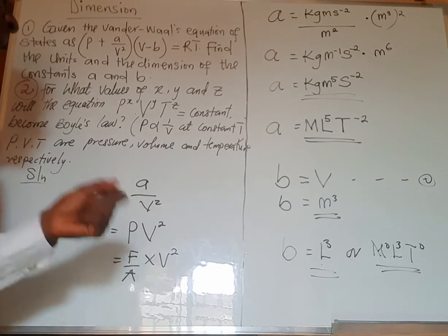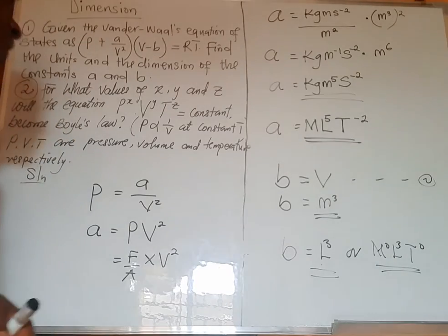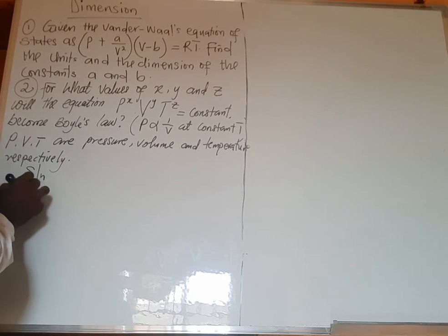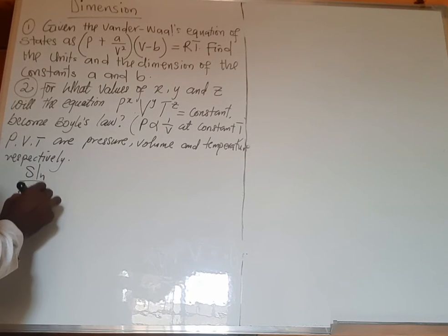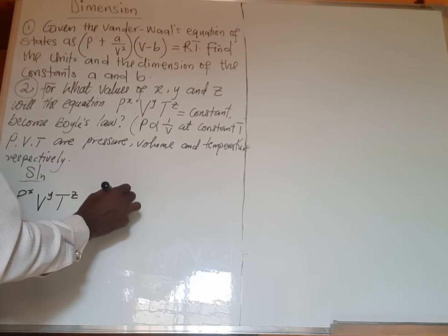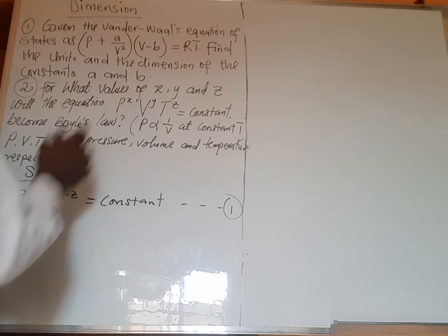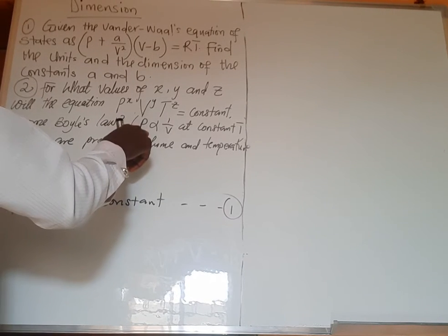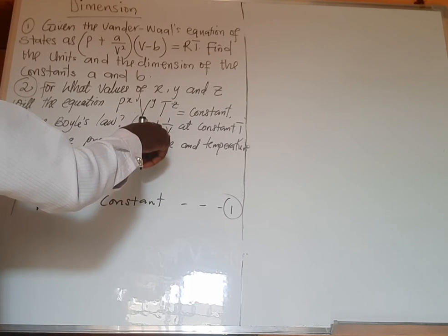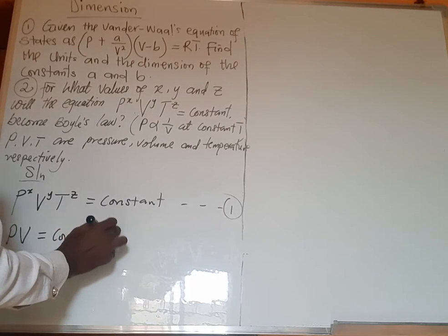Now that we know the unit and dimension of both constants in the van der Waals equation, let's look at the second question where we calculate x, y, and z. Given P raised to x, times V raised to y, times T raised to z, equals a constant — call this equation one. From Boyle's Law, P is inversely proportional to V, meaning PV equals constant — call this equation two.